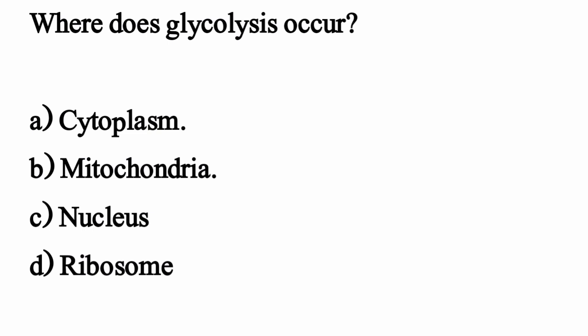Where does glycolysis occur? The correct option is Option A: Cytoplasm.